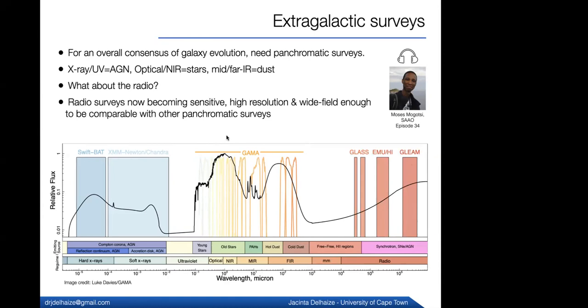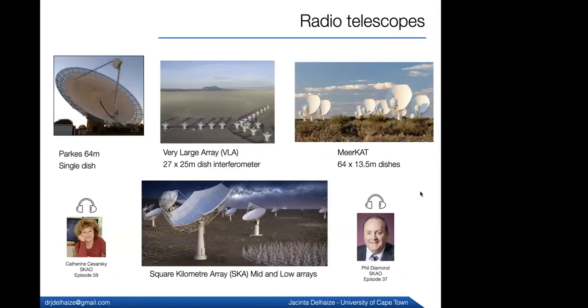But missing from this plot is the longer wavelength, so the radio. And here they are. Often the radio regime was left off these kind of SED plots like this because until very recently, the last five to 10 years, radio extragalactic surveys weren't as simultaneously sensitive and high resolution and wide-field enough to be comparable with these other multi-wavelength surveys. But now they finally are.